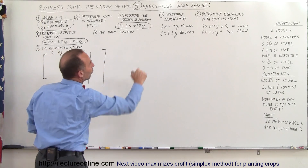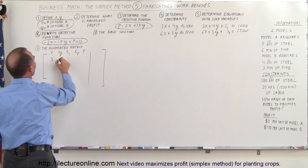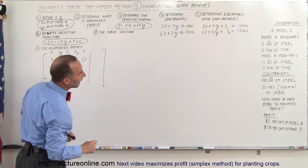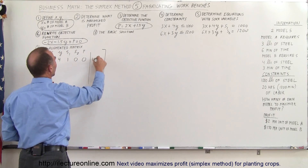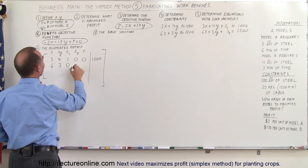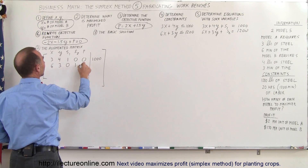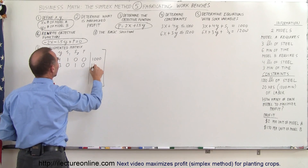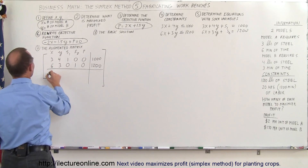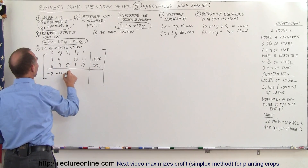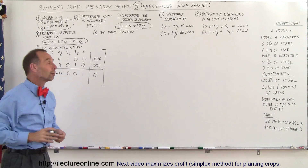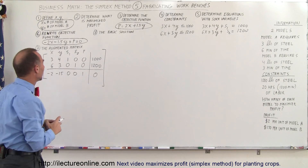Using the first equation, the coefficients give us: 3 for x, 4 for y, 1 for s1, 0 for s2, 0 for profit, and 1,000 on the right. The second equation gives: 6, 3, 0 for s1, 1 for s2, 0 for profit, and 1,200. Then we draw a line and put the objective function row: minus 2, minus 1.5, 0, 0, 1 for profit, and 0 for the right-hand side — that's the basic solution.